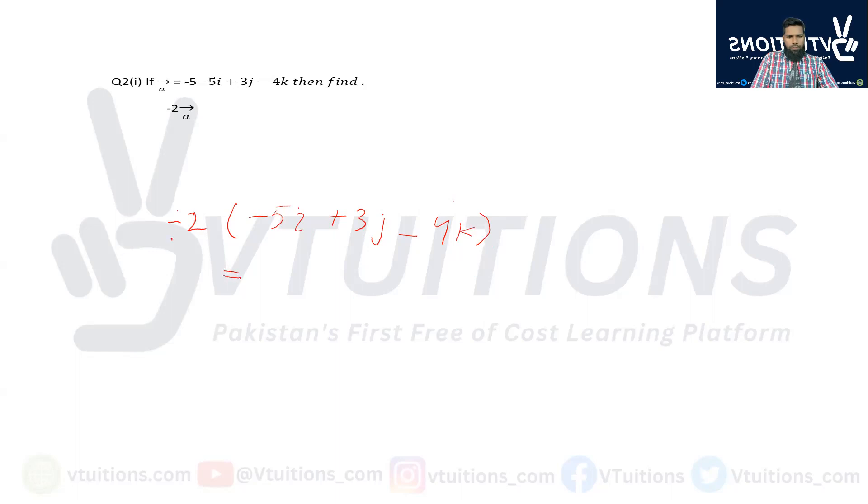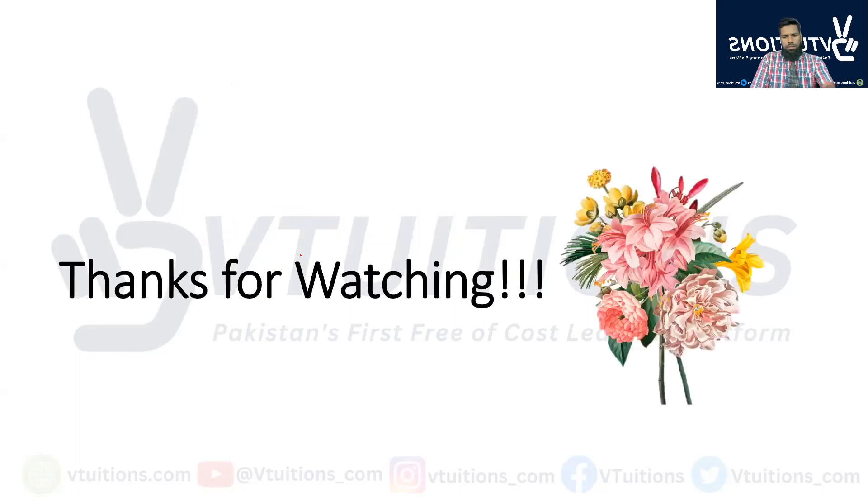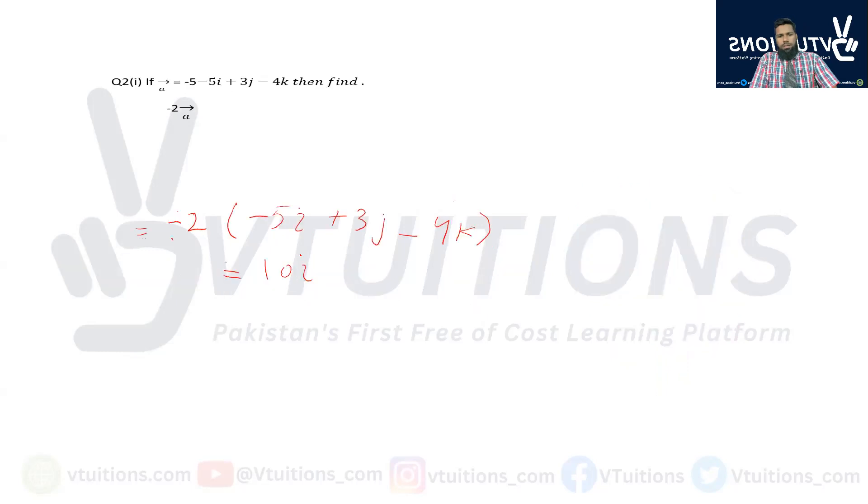And this is equal to: here we have equal to, is equal to 10 iota, 10 iota - 6j + 8k. Okay, this is the unit vector which is the sign that is the last one. Dear students, you will have to do it. So this is what I have told you.